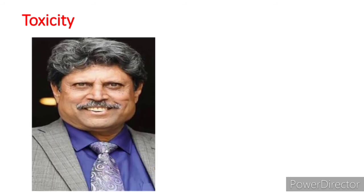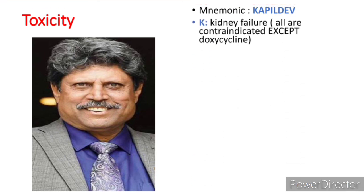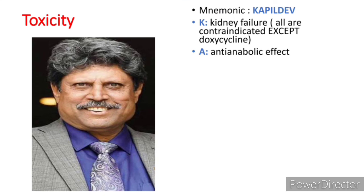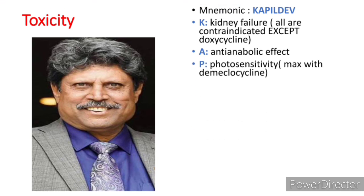Coming to toxicity — remember the mnemonic 'Kapil Dev.' The first side effect is kidney failure, except with doxycycline, because it is excreted in feces. Anti-anabolic effect means it decreases protein synthesis in the body, causing an increase in the serum urea and creatinine ratio. Photosensitivity is maximum with demeclocycline. Diabetes insipidus occurs due to ADH antagonistic action, and there is also liver toxicity.